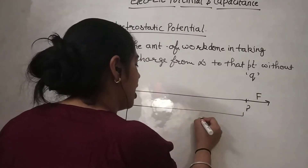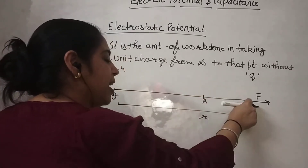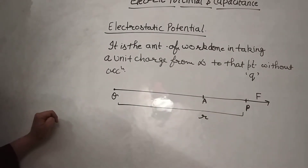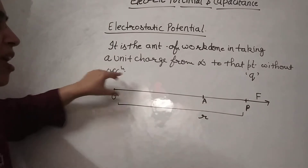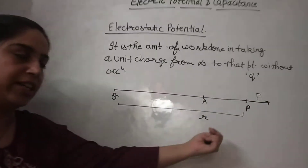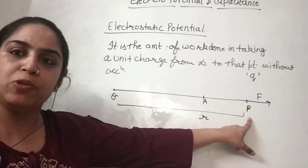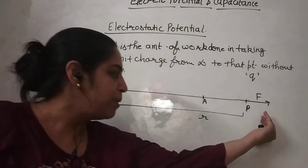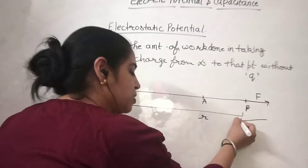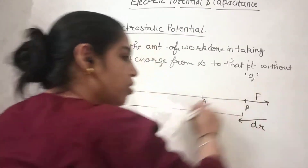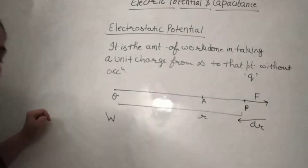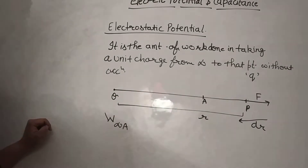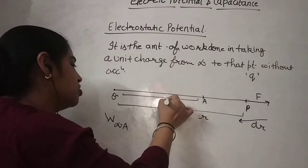Let this distance be r. At any time t, your charge is at position P. The force acts outwards, but the displacement dr is inwards — so the angle between force and displacement is 180 degrees. This work done is given by integral of F·dr with cos 180°, giving minus F dr. The value of F is q into E, and E is kq/r². So we write minus kqq/r² dr.